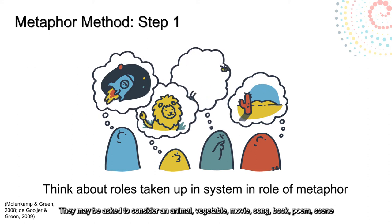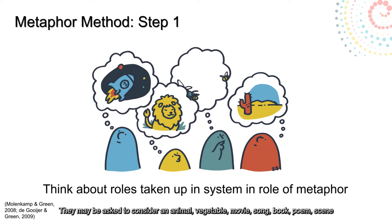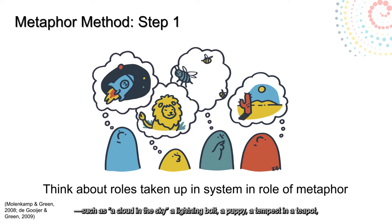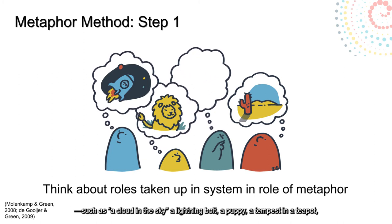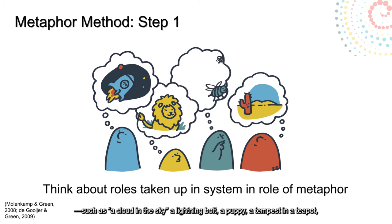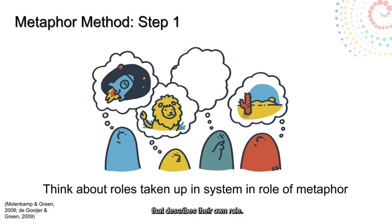They may be asked to consider an animal, vegetable, movie, song, book, poem, or scene — such as a cloud in the sky, a lightning bolt, a puppy, a tempest in a teapot — something like that which describes their own role in the system.